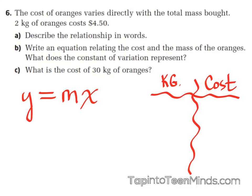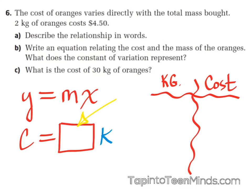That tells me we can use variables to represent our Y and our X. Y is our cost, so Hannah said we should use C for cost. She also gave us a number for M, which is our constant of variation — we'll hold off on that for a second. The other variable she used is K for kilograms. Now, what value is going to represent our constant of variation — the multiplier that gets my cost to increase?